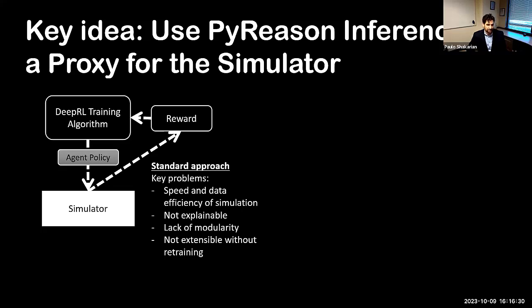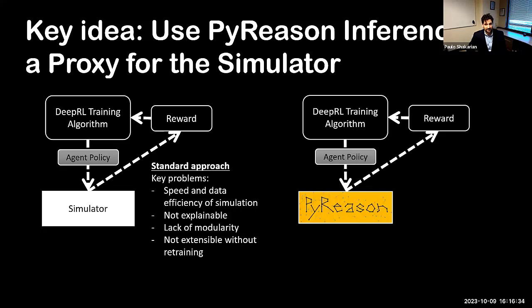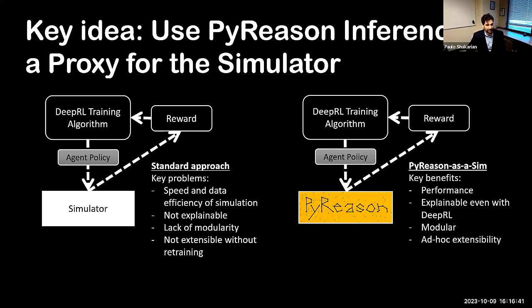So we have all these shortcomings. With using PI reason, we overcome some of these issues. First, it's highly performant. It gives you an explanation as to how the environment evolves, so you get an element of explainability even if you're using deep RL or your reinforcement learning training.